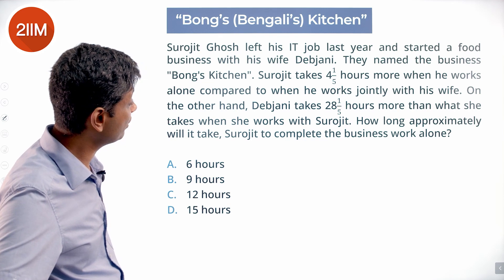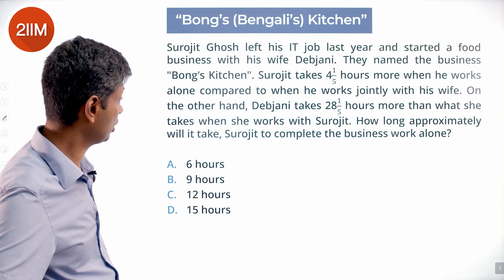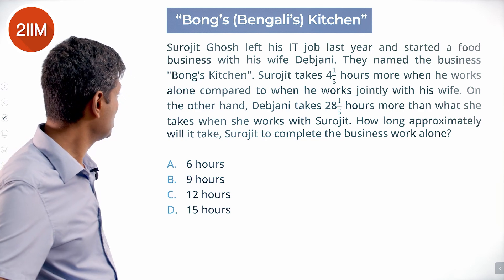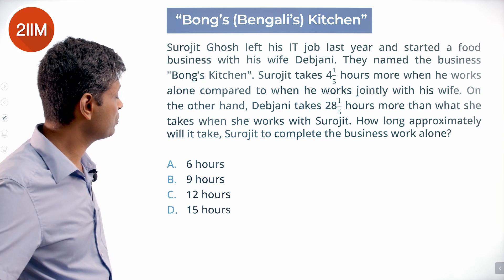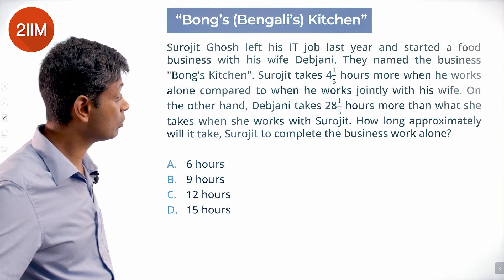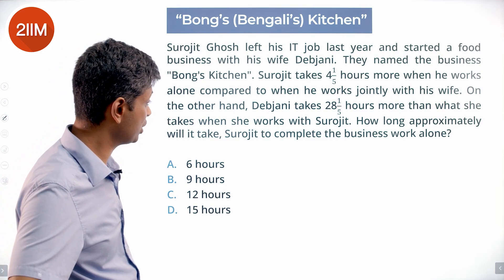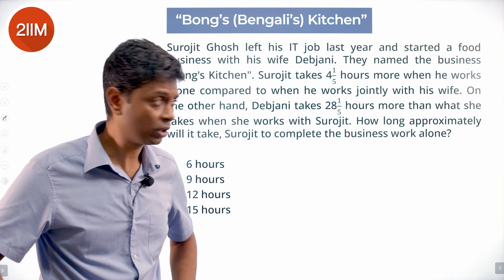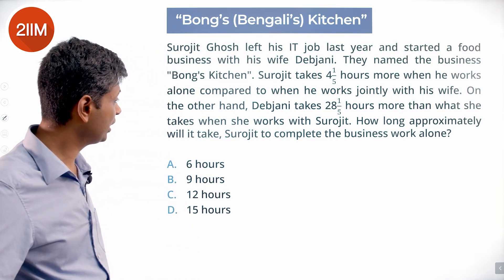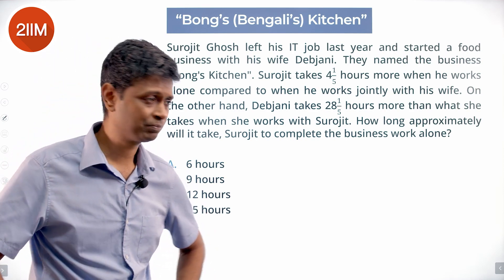Surajit takes 4⅕ hours more when he works alone compared to when he works jointly with his wife. On the other hand, Debjani takes 28⅕ hours more than what she takes when she works with Surajit. How long approximately will it take Surajit to complete the business work alone?